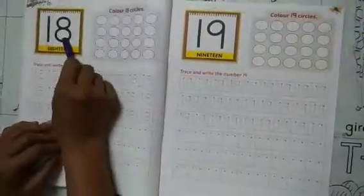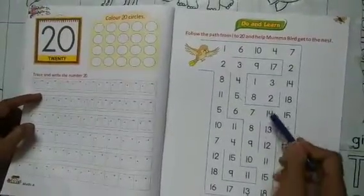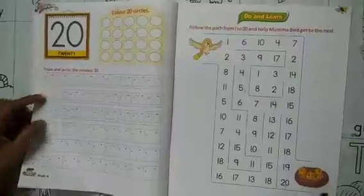1, 8, 18. 1, 9, 19. 2, 0, 20. 1, 2, 3, 4, 5, 6, 7, 8, 9, 10, 11, 12, 13, 14, 15, 16, 17, 18, 19, 20.